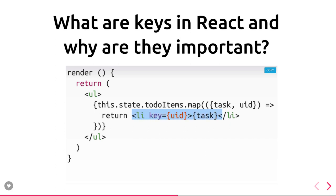Another important question: why do we pass a key when we render multiple child components? React considers the parent component like a YouTube video list component that renders multiple video list item components. If you're iterating and rendering a single child component 10 times, you pass a key. The key is important to track each and every DOM change happening in each individual component. Without the key, React will not be able to uniquely identify each child component. So the key is required for React to track every child.